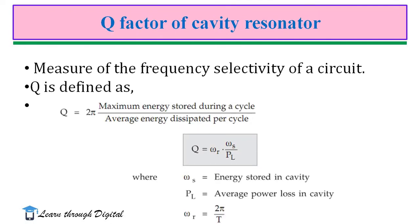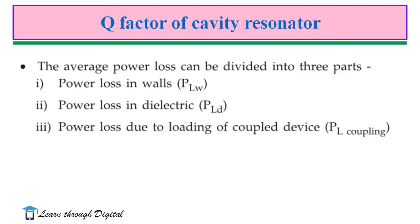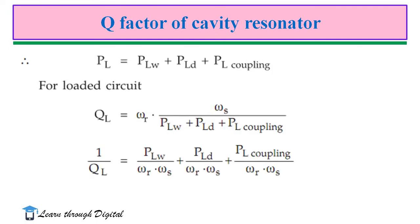Next, the Q factor. Q factor is a measure of the frequency selectivity of a circuit. Q is defined as: Q = 2π × (maximum energy stored during a cycle) / (average energy dissipated per cycle), or Q = ω × Ws / PL, where PL is the power loss. The average power loss in a cavity is divided into three parts: power loss in walls (PLW), power loss in dielectric (PLD), and power loss due to loading of the coupled device (PL_coupling). Thus, PL = PLW + PLD + PL_coupling.